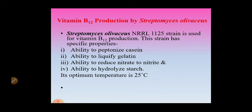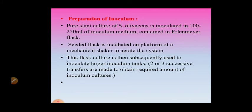We are going to study the production of vitamin B12 by the microorganism Streptomyces olivaceus, which is an actinomycetes. The strain NRRL 11125 is used for vitamin B12 production. This strain has specific properties: ability to peptonize casein, liquefy gelatin, reduce nitrates to nitrites, and hydrolyze starch. The optimum temperature for this microorganism is 25 degrees Celsius.